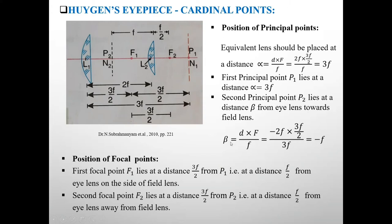Means this beta distance, P2 point is at a distance beta, it is a distance F. See here this P2 is at a distance F. This is minus because it is left side of this lens, according to sign convention it is negative.